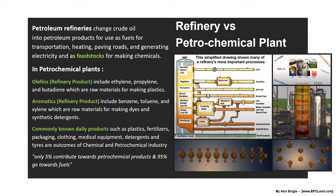At the same time, these refinery outputs are feedstocks to the chemical industry — meaning they are raw materials for petrochemical plants. Whatever we get from a refinery, we categorize into two parts: olefins and aromatics. Olefins have straight structures, while aromatics have ring-type structures — we won't go deep into chemistry, but these are important concepts to understand.